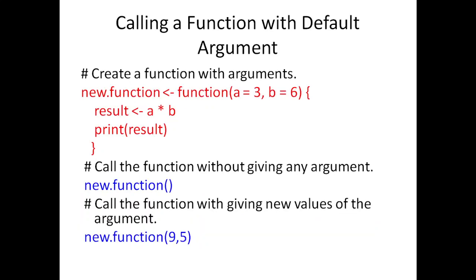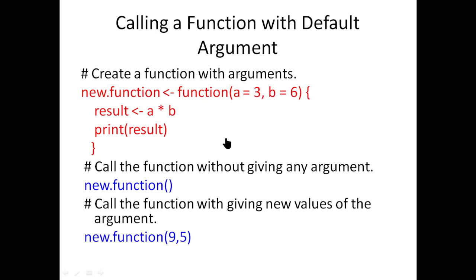Calling a function with a default argument: one argument is fixed in the function definition. For example, a value — a star b, that is a equals 3 times 6 — is computed and printed. But if you want to change the value instead of 3 and 6, you can change the parameter when calling the function, and the result will change automatically. So the default argument is defined when defining the function.